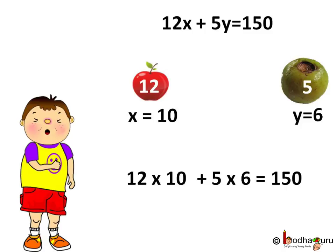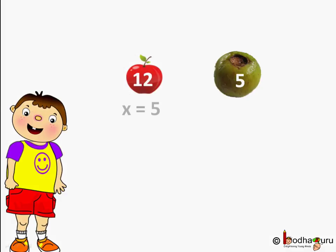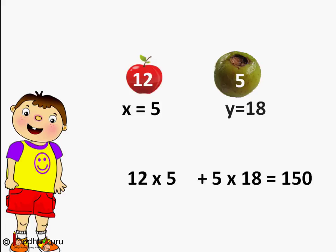Can we try other combinations? Let us take 5 apples. So 12 into 5 equal to Rs.60 will go in apples. Now Rs.150 minus Rs.60, 90 will be left. So in Rs.90 I can take 90 by 5 which is equal to 18 guavas. So if we observe, X equal to 5 and Y is equal to 18 is also a solution. So this equation has multiple solutions.